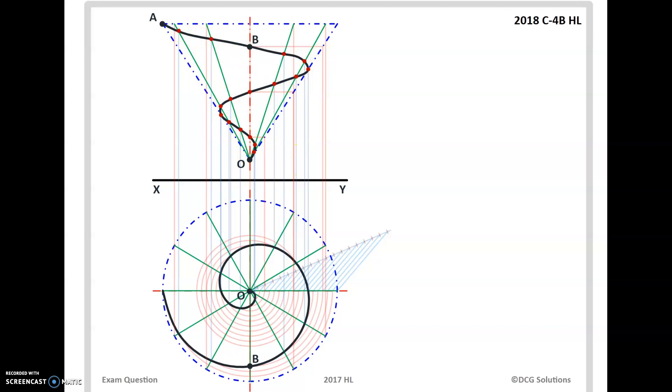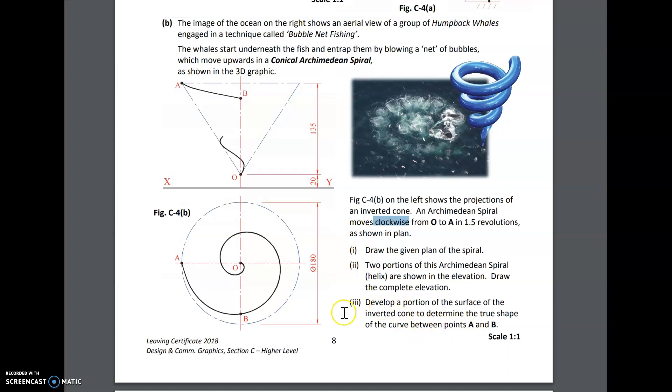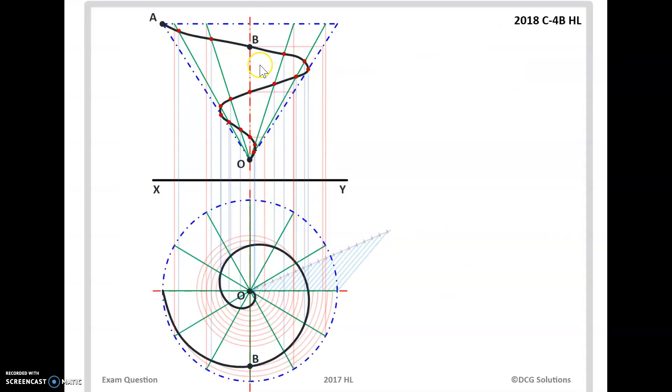Part three of the question asks us to develop a portion of the surface of the inverted cone to determine the true shape of the curve between A and B. So A and B is here and here. To get the true shape, have we got the true length of the side of the cone? Looking from O to A, that is a true view of the side. It's a true length as well. So we're going to mark that out. We're going to mark it out here.